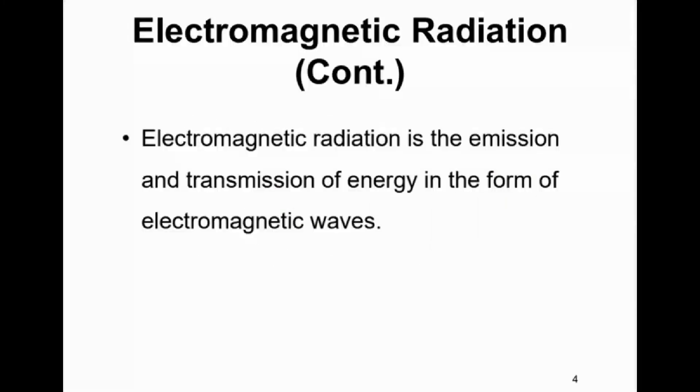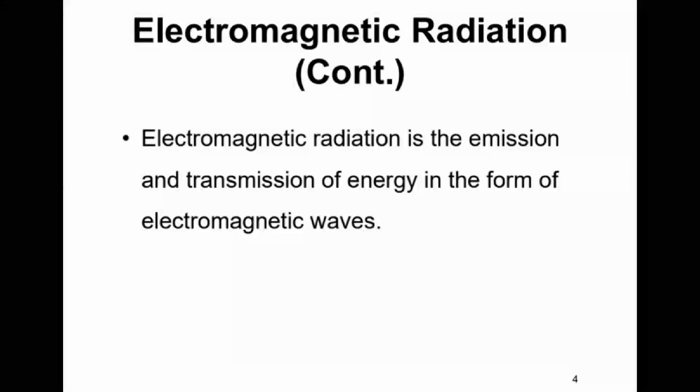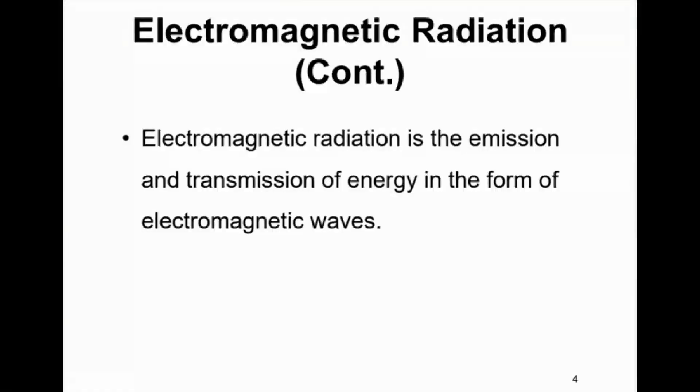So what does electromagnetic radiation mean? Since the radiation that comes from the Sun contains the electric field and magnetic field, it is called electromagnetic radiation. So electromagnetic radiation can be defined as the emission and transmission of energy in the form of electromagnetic waves. So this means that electromagnetic radiation carries energy through space.